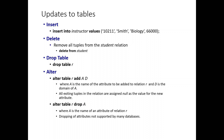To alter a table: ALTER TABLE R ADD A D, where A is the attribute name and D is the data type — for example, ALTER TABLE R ADD mobile INTEGER(9). To drop an attribute: ALTER TABLE R DROP A. Note that dropping of attributes is not supported by many database versions, so you must check your specific system.